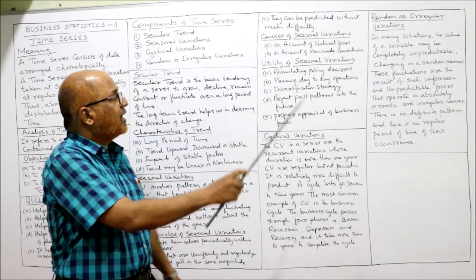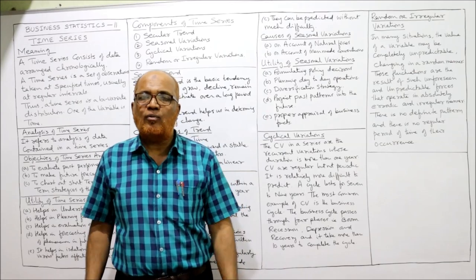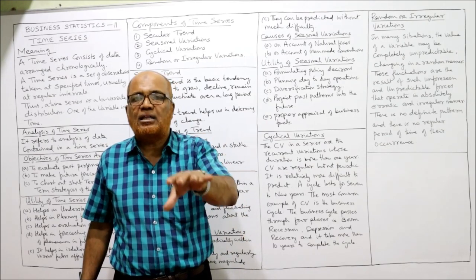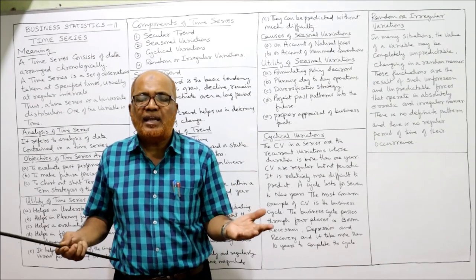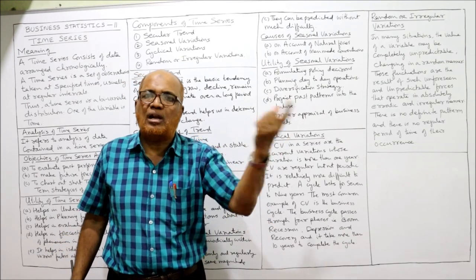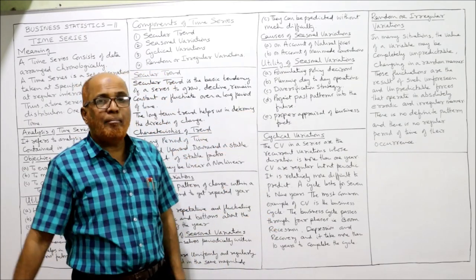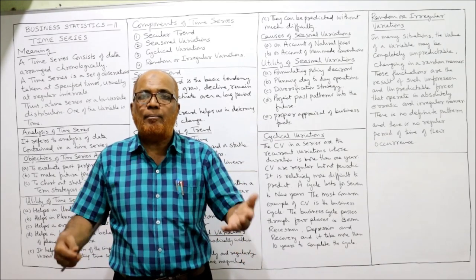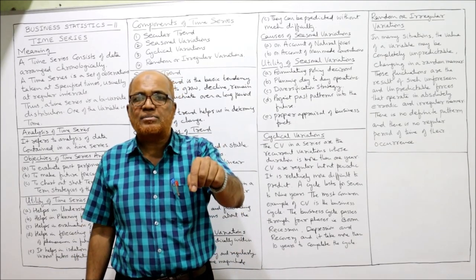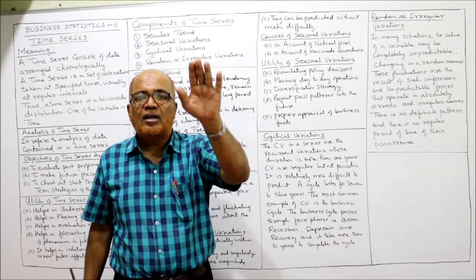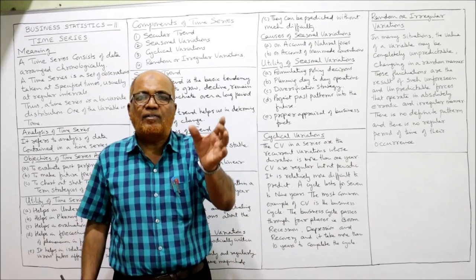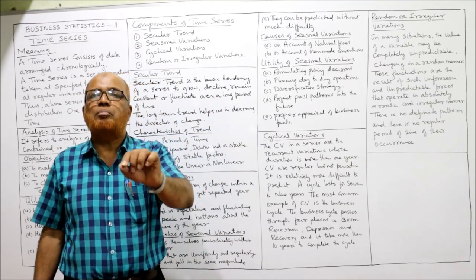The first cause is on account of natural forces — like rainfall, monsoon. Monsoon will occur every year naturally in the months of June, July, or August — by nature we cannot change it. These seasonal variations occur on account of natural factors which cannot be changed. Secondly, on account of man-made conventions — there are some rules made by man due to which seasonal variations occur. For example, during festival season, whenever the festival comes, the demand for goods increases; when the festival is over, the demand comes down. Festivals are man-made.